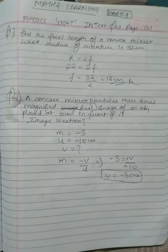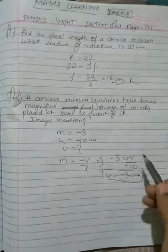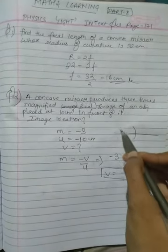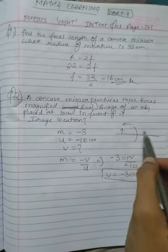This means the image is placed at a distance of 30 cm in front of the mirror.